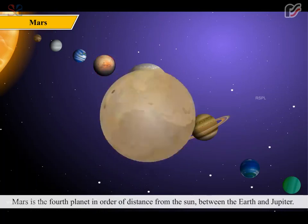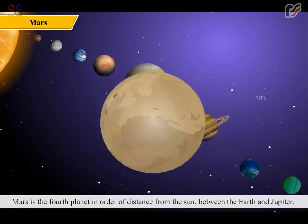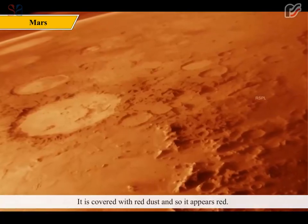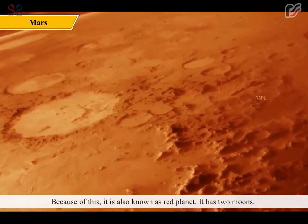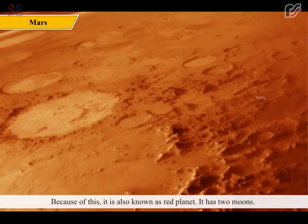Mars is the fourth planet in order of distance from the Sun, between the Earth and Jupiter. It is covered with red dust and so it appears red. Because of this, it is also known as the red planet. It has two moons.